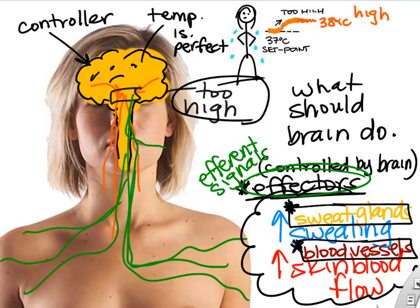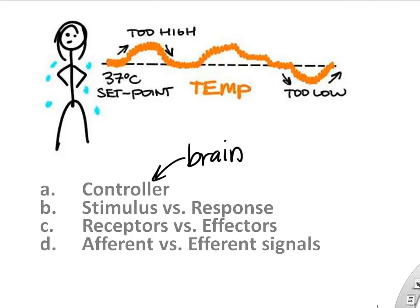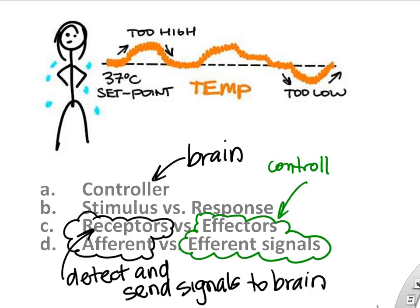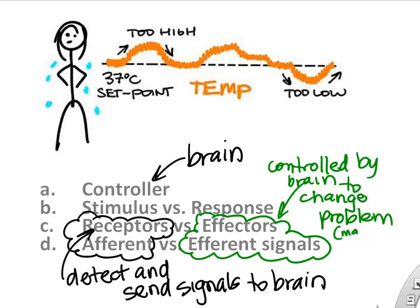Hopefully the vocabulary isn't throwing you off too much. The result is a more stable temperature now that we've had this response. To review: the controller was the brain. Receptors are cells or neurons that detect changes in homeostasis and send those signals back to the controller. Effectors are controlled by the brain and make adjustments needed for homeostasis. Afferent and efferent signals simply mean signals going to or from the brain.